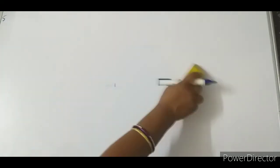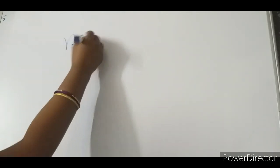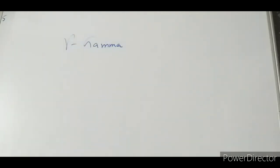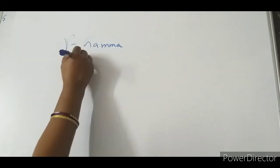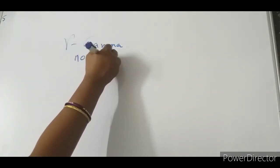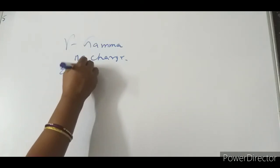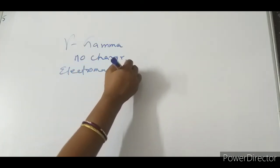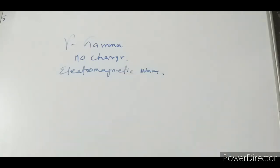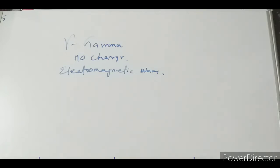Gamma: this is gamma rays. It has no charge — it is an electromagnetic wave. Gamma is a short-range electromagnetic wave, and it follows all the properties of electromagnetic waves. So these are all about alpha, beta, and gamma radiation.